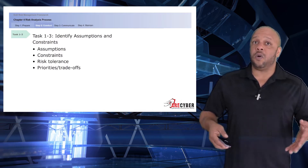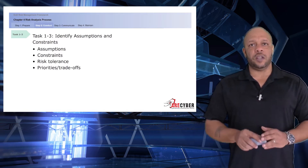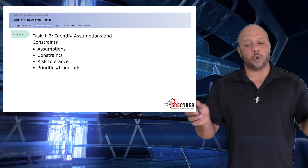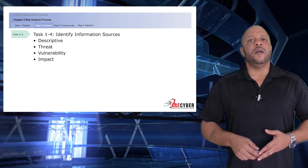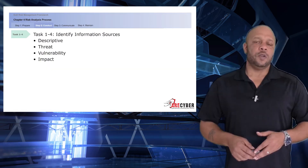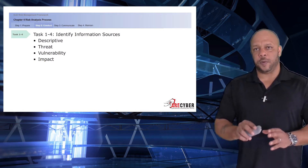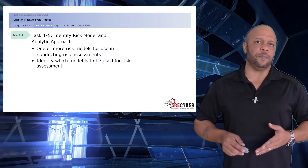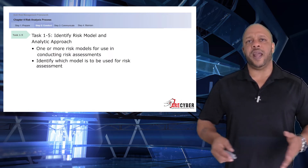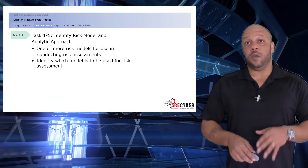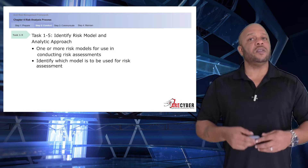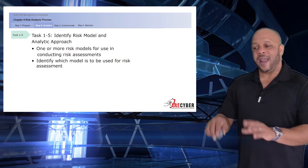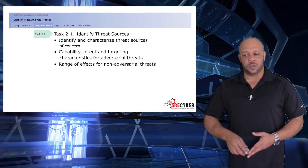Next, identify any assumptions or constraints. The organization's risk tolerance should be well-defined and communicated, along with any priorities or trade-offs that might have to occur. Then identify information sources, being descriptive with the different threats, vulnerabilities, and potential impacts against the information system. Finally, identify the risk model and analytic approach. There may be one or more risk models in use — identify which model is to be used for the risk assessment and stick to it.